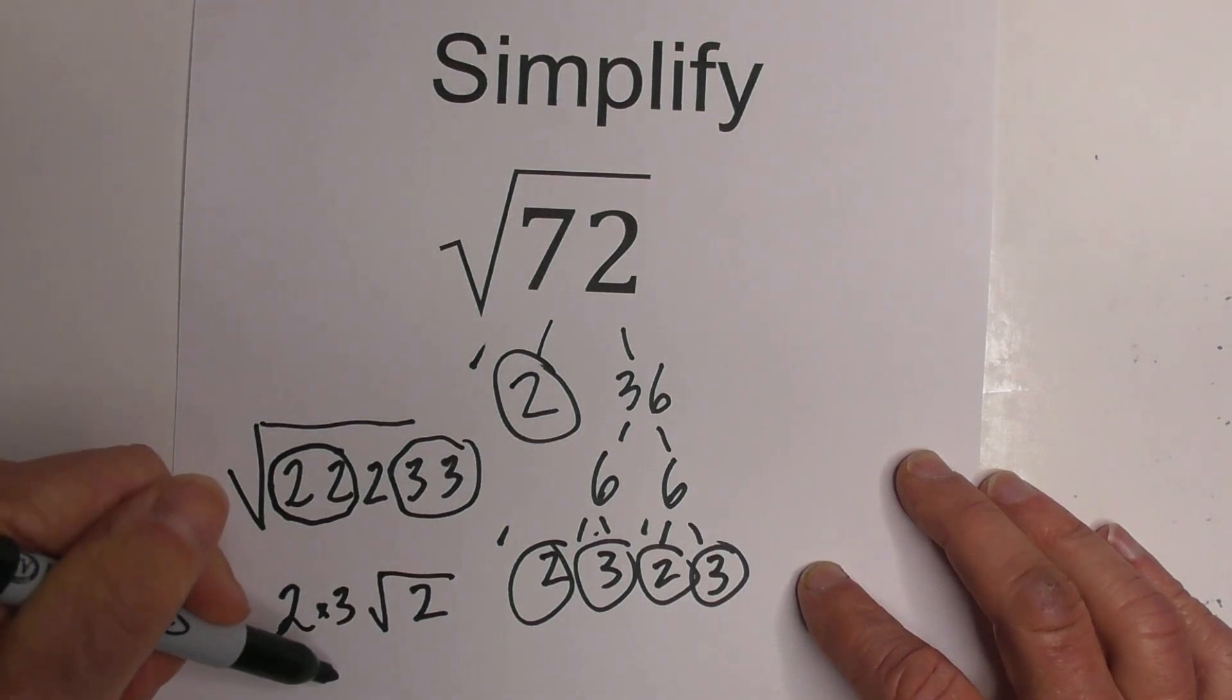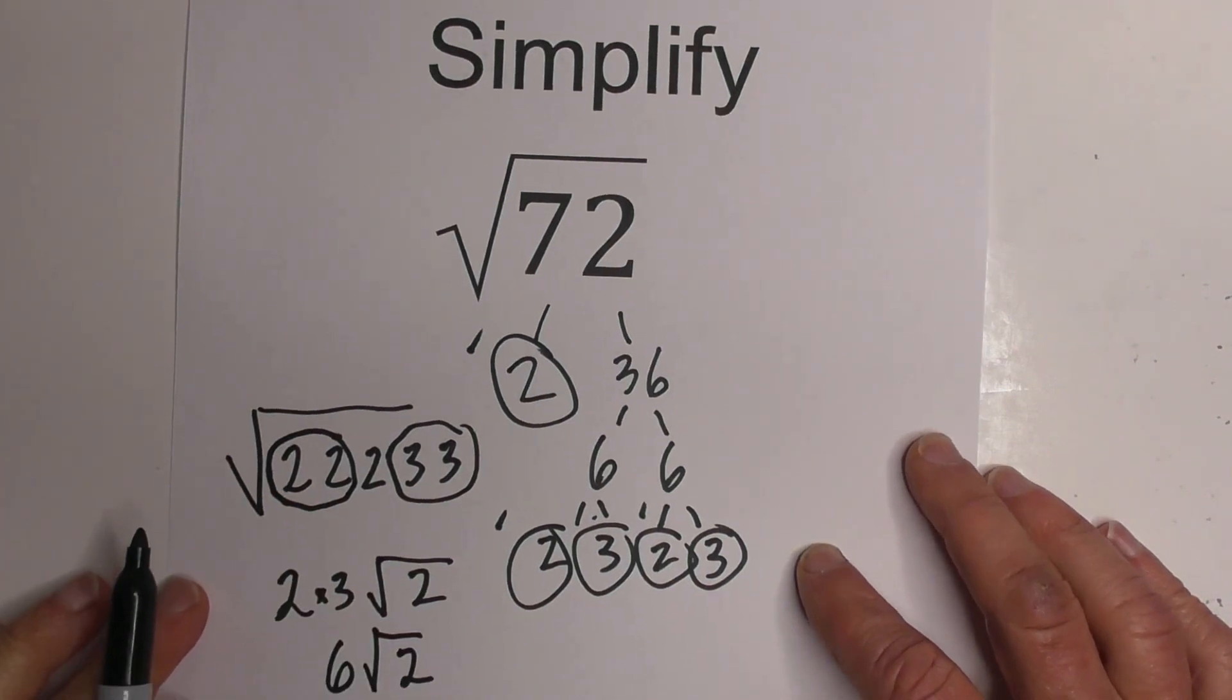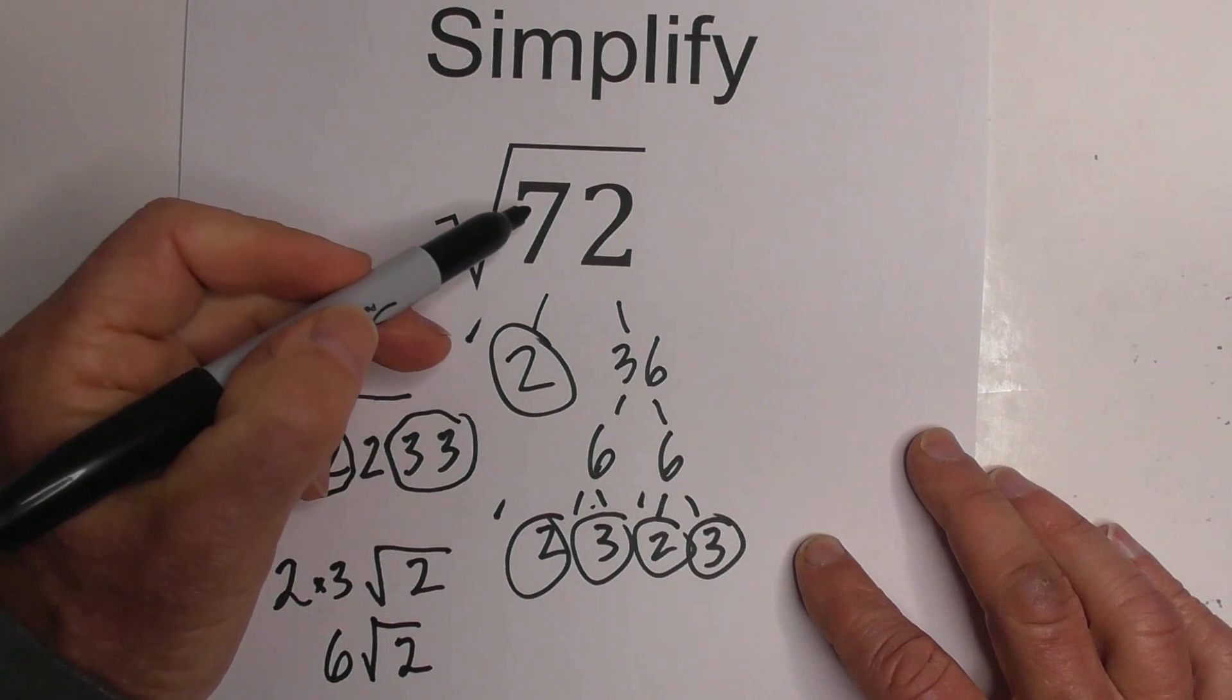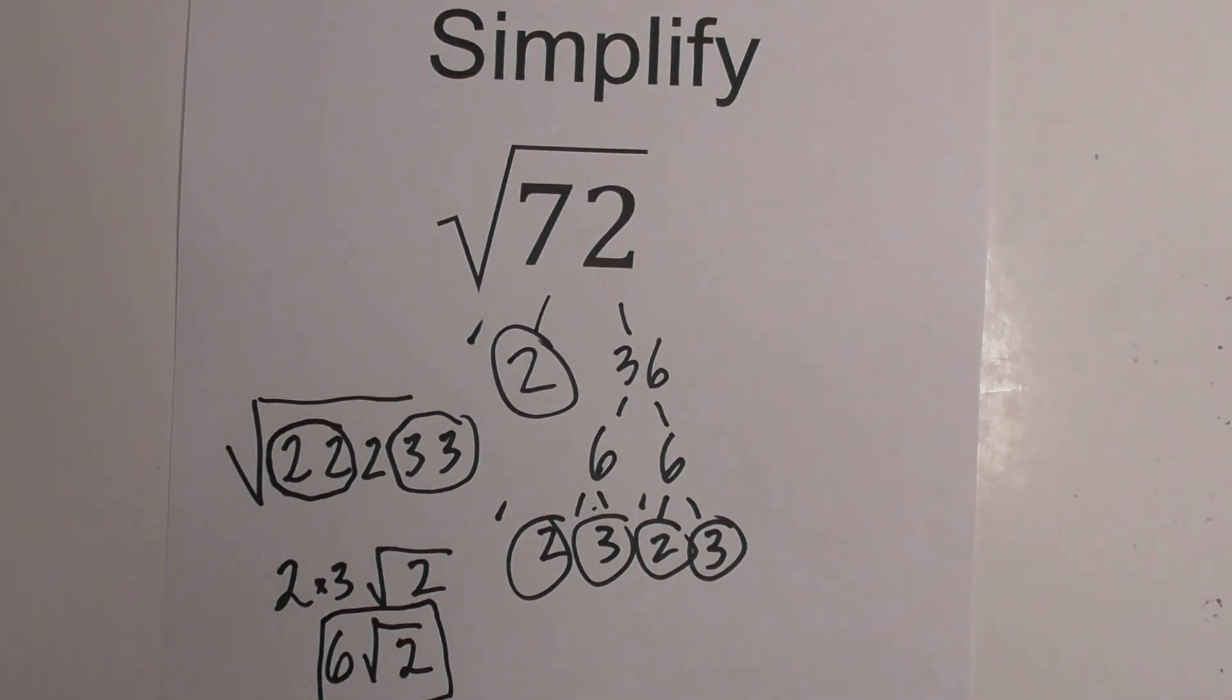Now at this point we have the 2 and 3 on the outside. We multiply them together, and then we still have the 2 underneath. So the square root of 72 simplified is 6 times the square root of 2. I hope that was helpful.